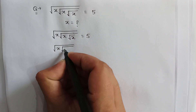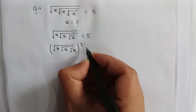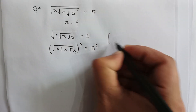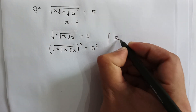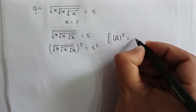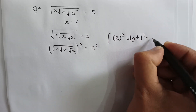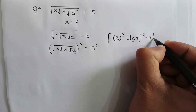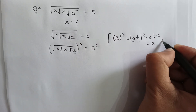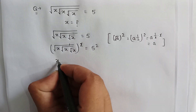Squaring both sides, we get (√x · √x · √x)² = 5². As we know, if √a is written with a square power, then √a = a^(1/2), and (a^(1/2))² = a^(1/2 × 2) = a, because the powers cancel out.